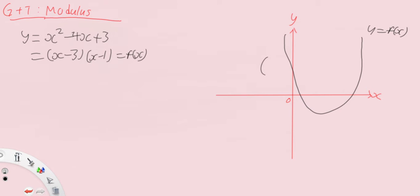Let's calculate the y-intercept, x-intercepts, and turning point. We have: y-intercept at (0, 3), x-intercepts at (1, 0) and (3, 0). The turning point is at x equals 2, which is the midpoint of 1 and 3. Substituting x equals 2: 2 squared minus 4 times 2 plus 3 gives us minus 1. So the turning point is (2, -1).